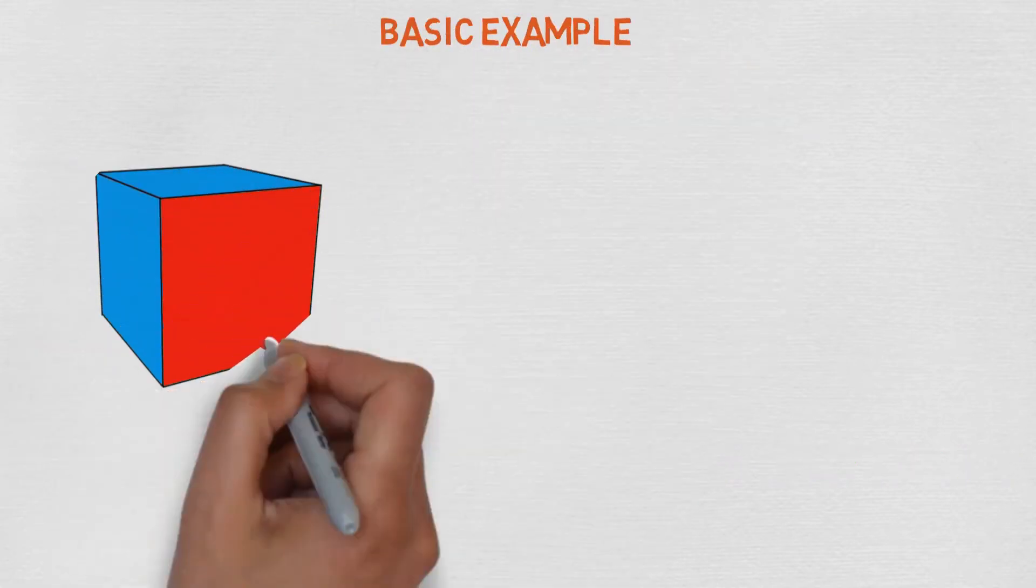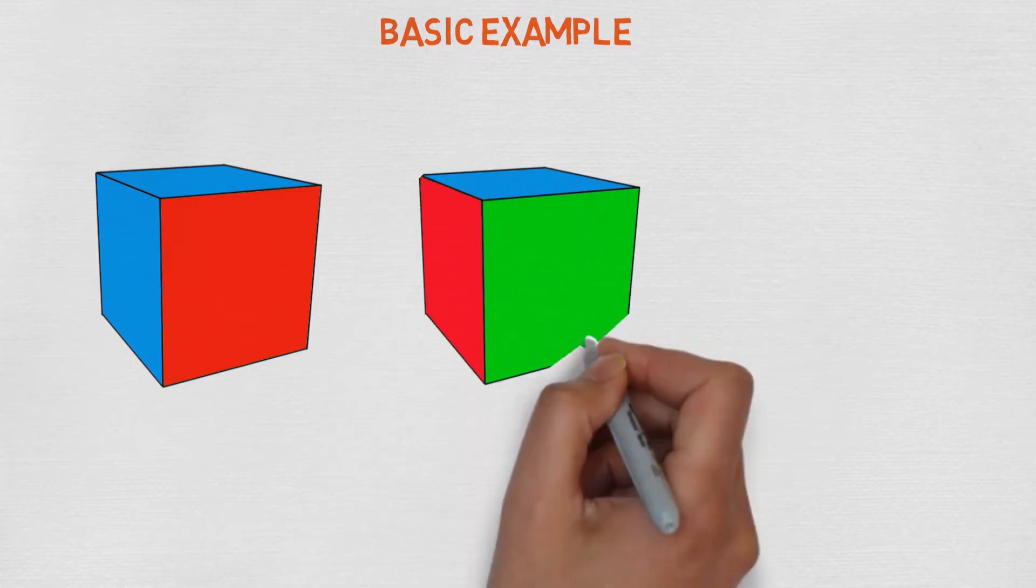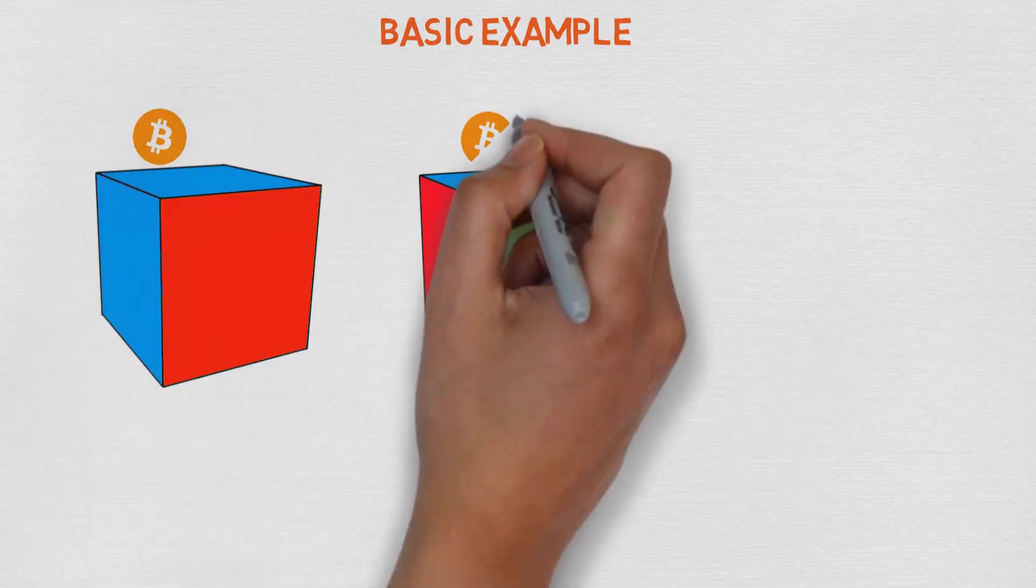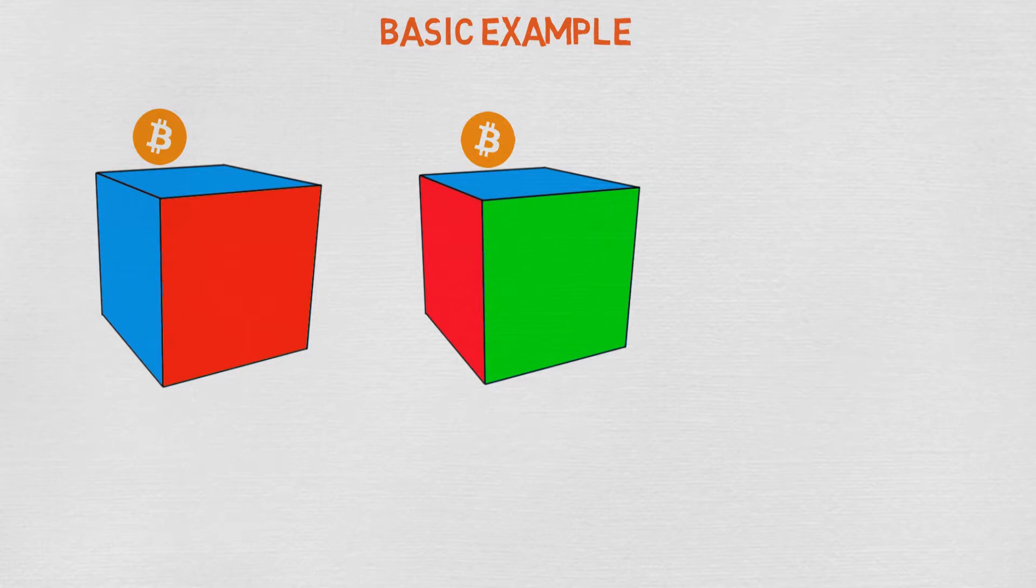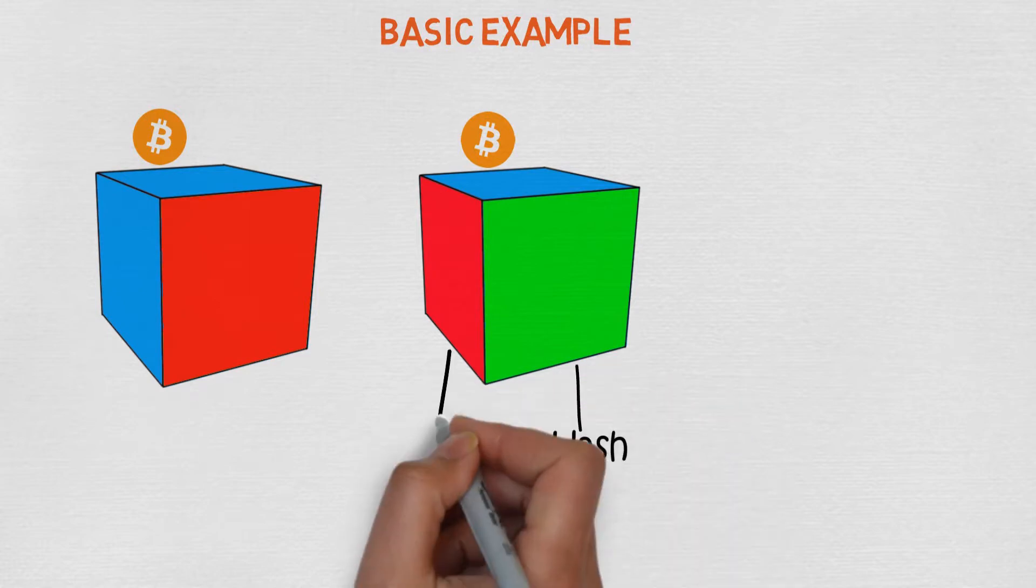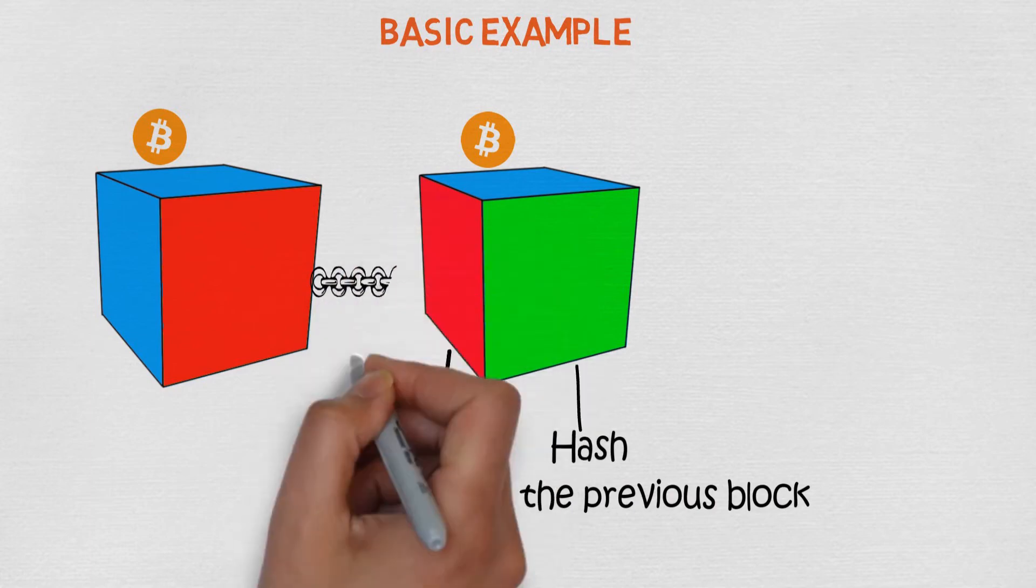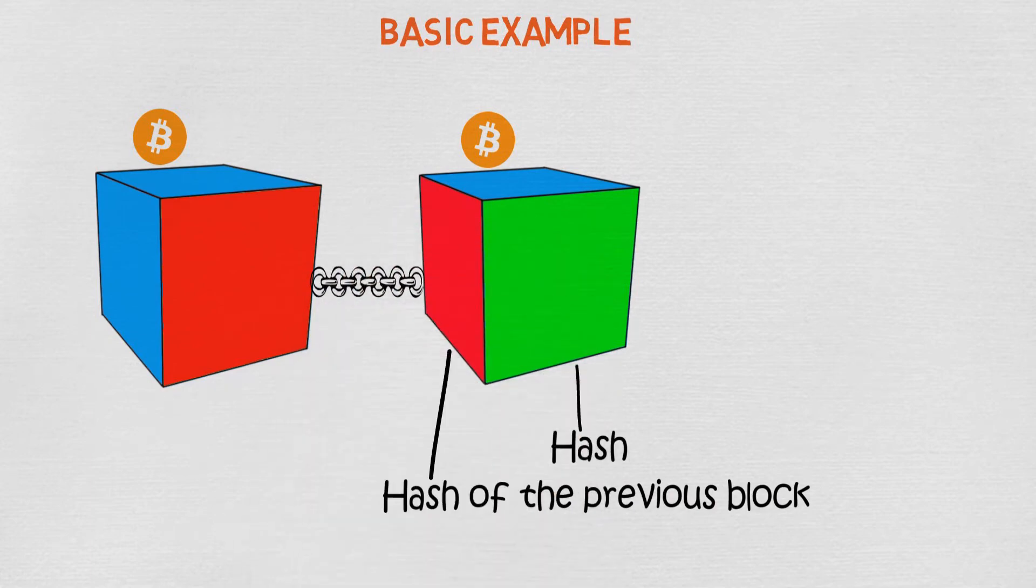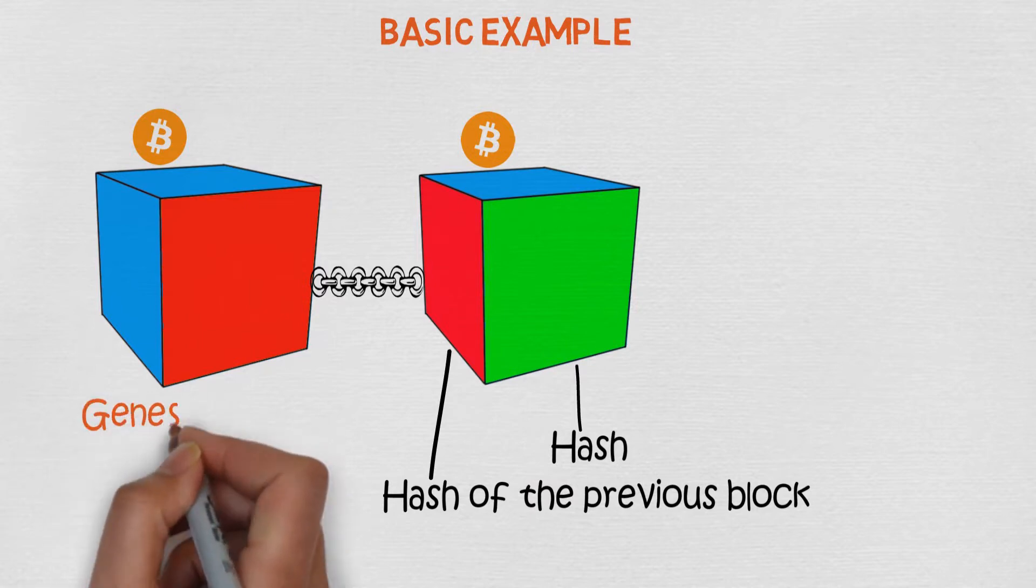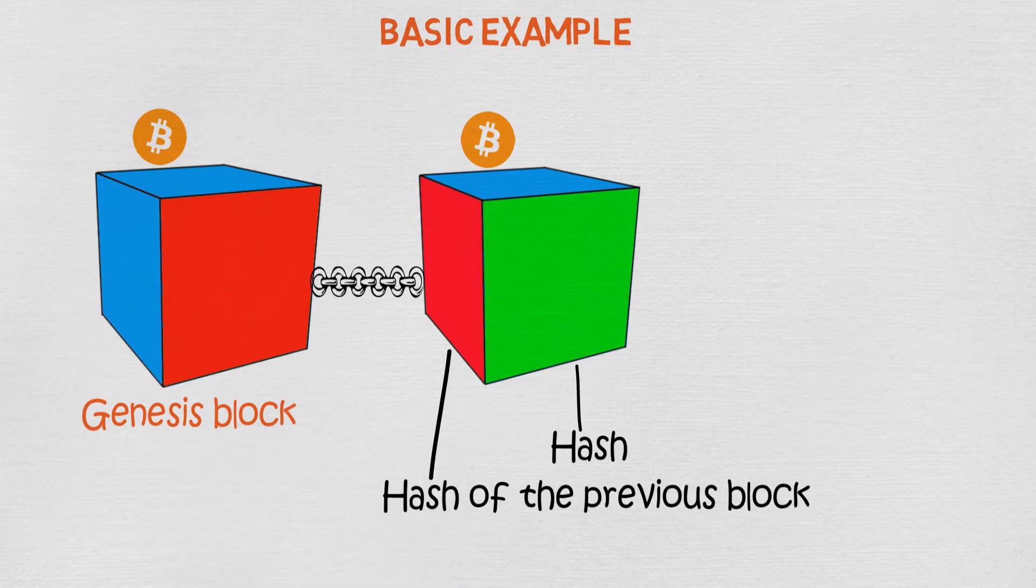Let's summarize the video with one basic example of blockchain. Here we have two blocks. Inside the block is the data of transactions. Each block has a hash and a hash from the previous block. So now these two blocks can connect, because the hash of the first block matches with the previous hash of the second block. But what about the first block, when there is no previous block with the hash? Well, this block is a unique one and it's called the Genesis block.